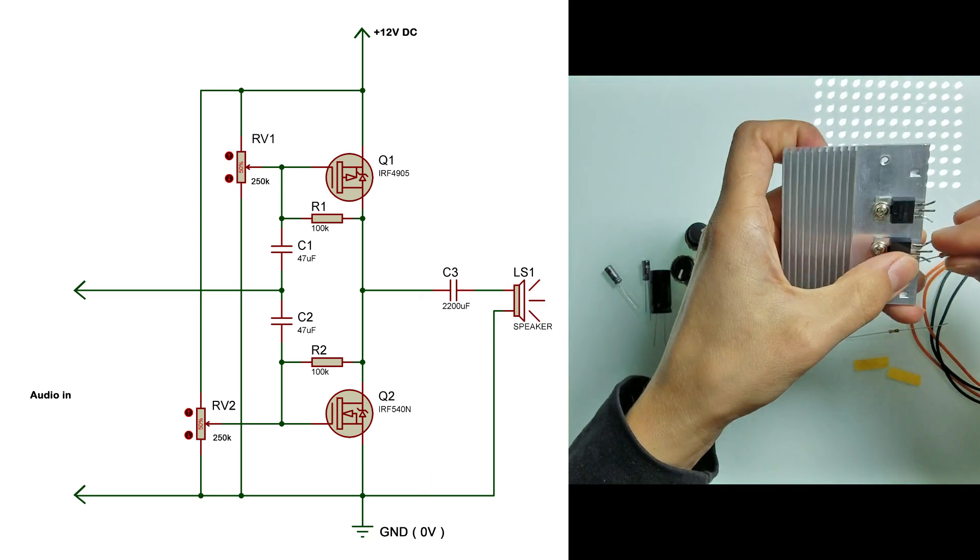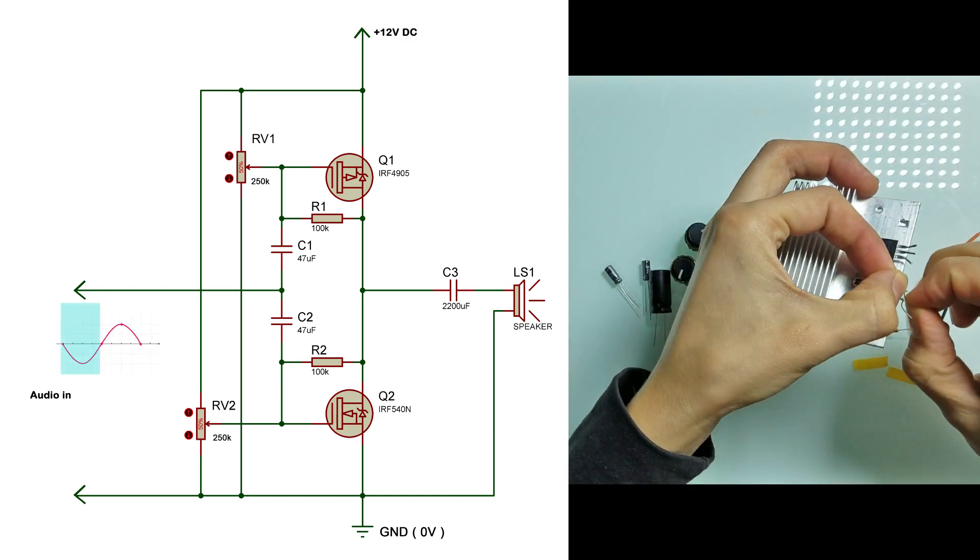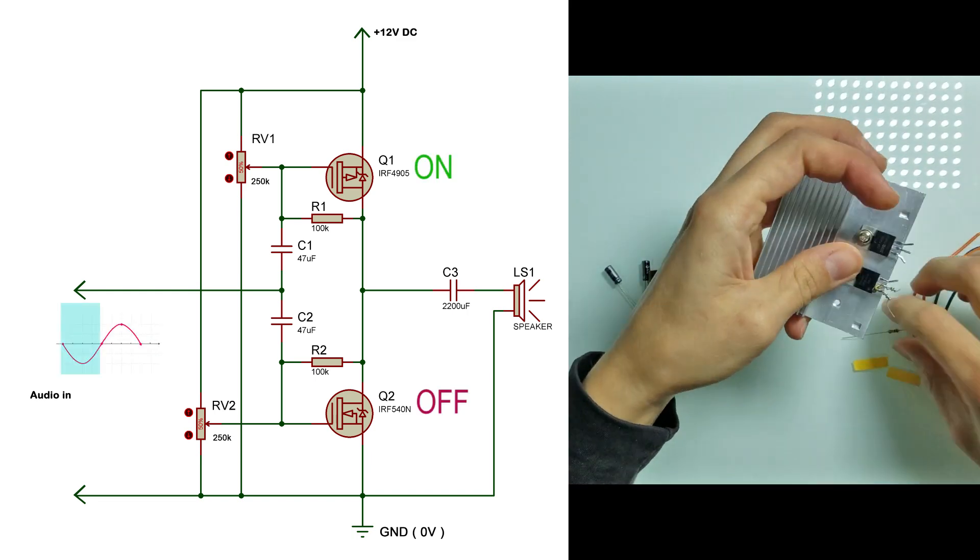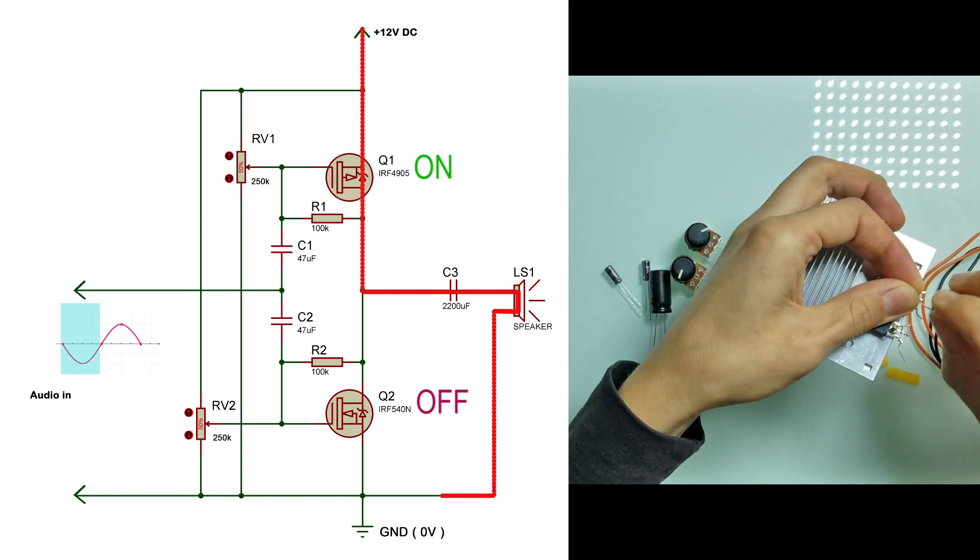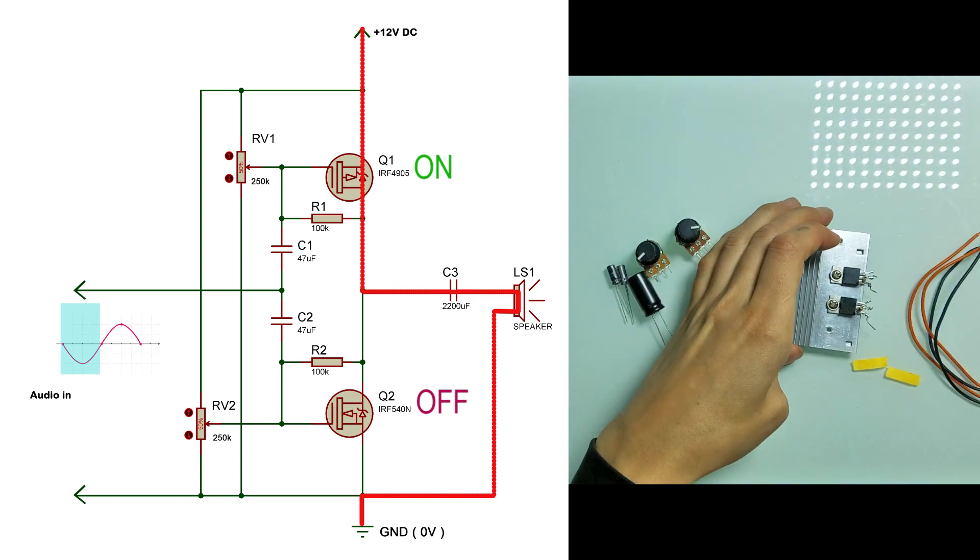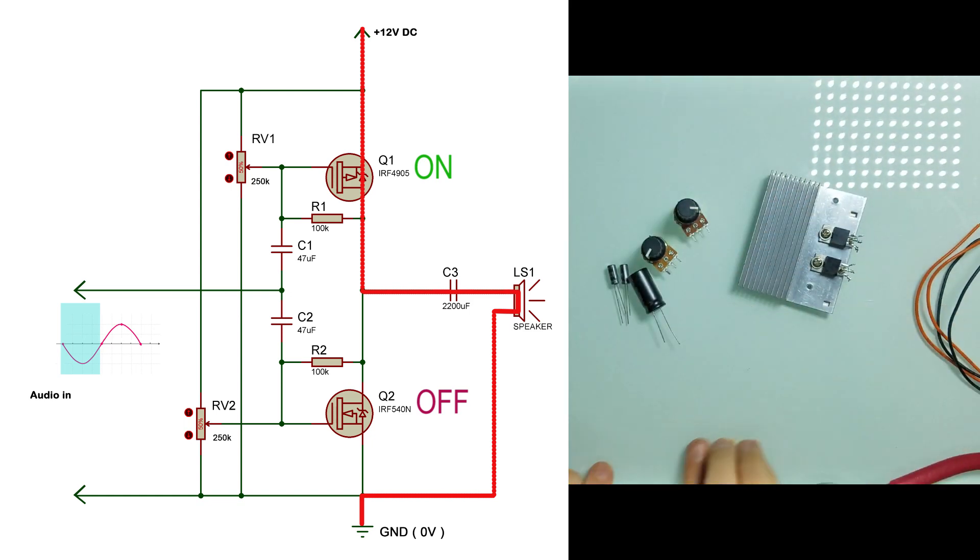To understand how it works, let's imagine that we have input signal with the negative half cycle at the input. In such case Q1 turns on and Q2 turns off. So current flows through Q1 then through capacitor C3 and through the loudspeaker to the ground. Capacitor C3 charges in this period.